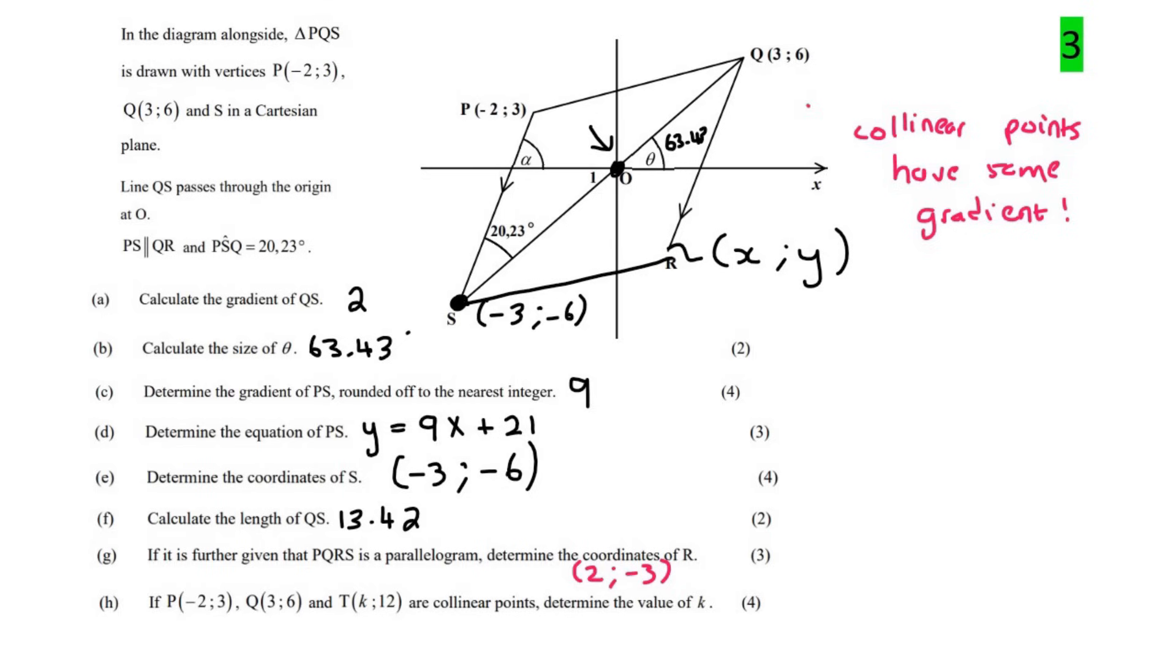So what we can do then is we can go work out the gradient of PQ. So we can work out the gradient of PQ using the gradient formula, so that would be 6 minus 3 divided by 3 minus minus 2. And so that would just give us 3 over 5. And then, now that must be the same gradient as QT, for example. So you could say that the gradient of PQ must be the same as the gradient of QT, or if you wanted to, you could say the gradient of PQ must be the same as the gradient of PT. It doesn't really matter.